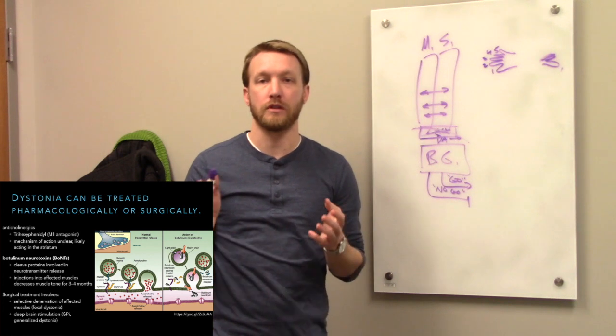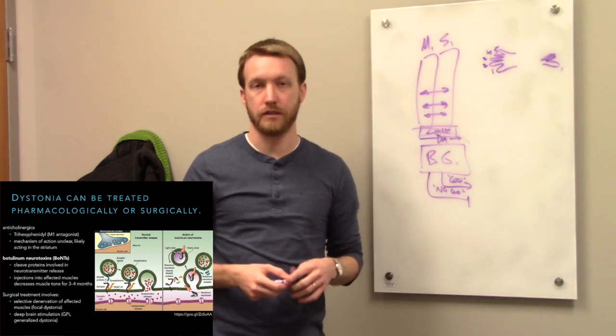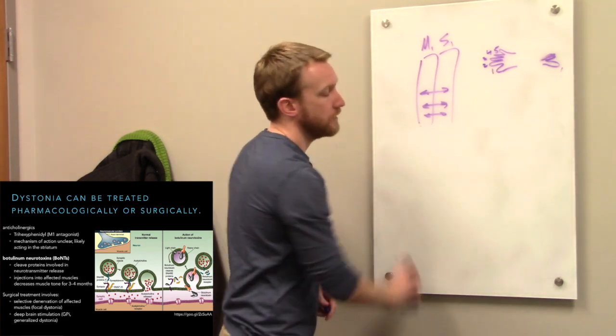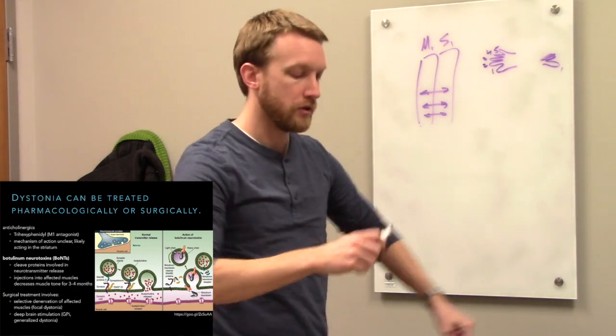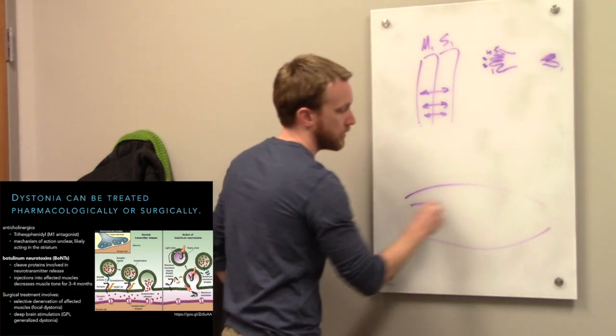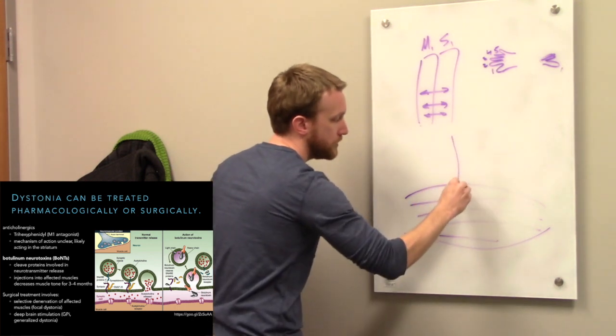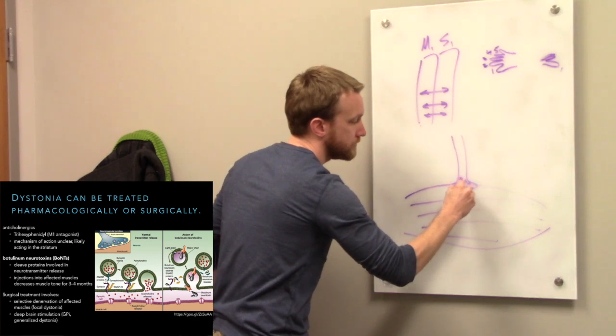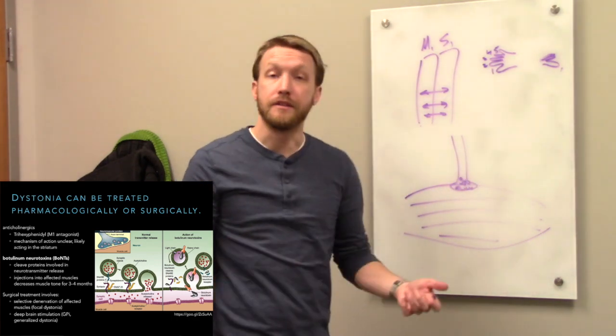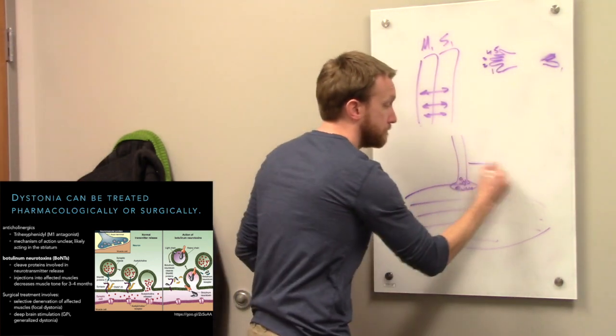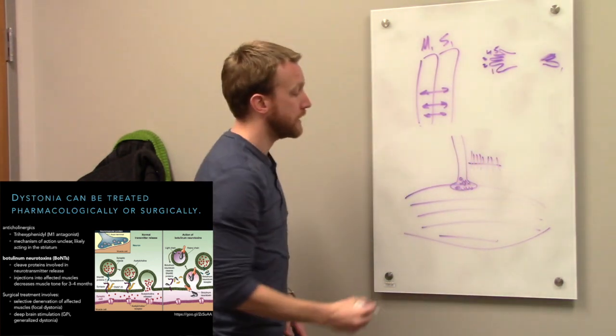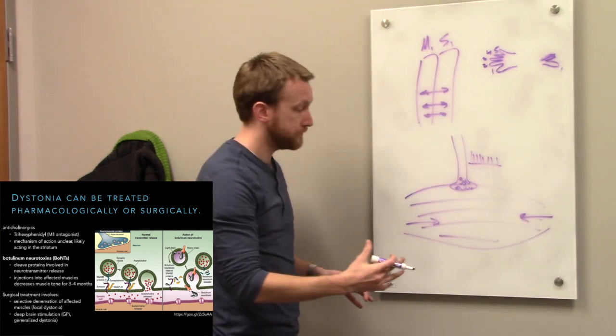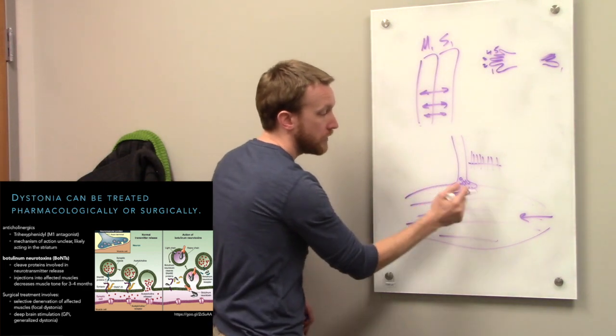We can also act more at the level of the lower motor neuron and that is what Botox is going to do. So the botulinum neurotoxins are going to break apart the proteins necessary for neurotransmitter release. So if we are going to contract a muscle, the way that we do that is by releasing acetylcholine. And in dystonia what we have is high levels of tonic motor neuron activity leading to high levels of tonic muscular contraction.